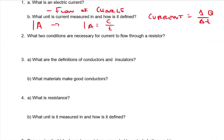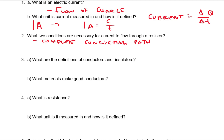What two conditions are necessary for current to flow through a resistor? In order to have current flow, we need a complete conducting path. The other thing we need is a voltage — a push to move charges.